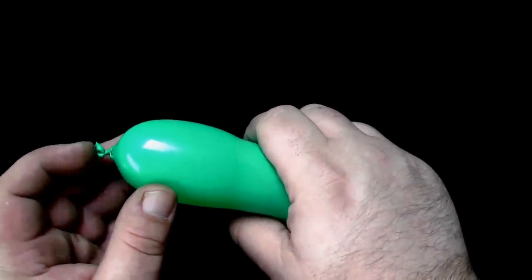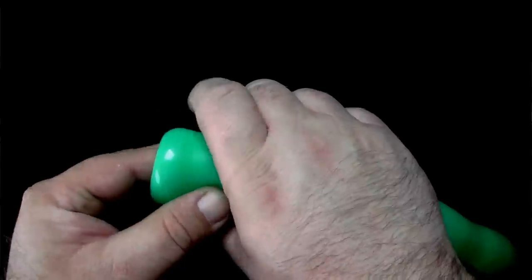Start with the balloon you will use for the stem. Begin twisting your design at the nozzle end of the balloon. Make a tulip twist.